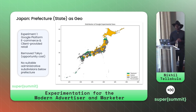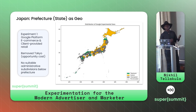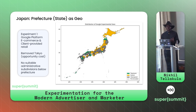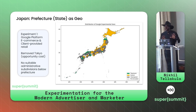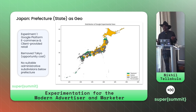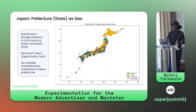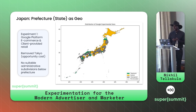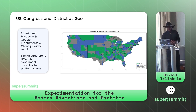One experiment currently running is in Japan, where we use prefecture as the geo. Japan's metropolitan areas are very densely populated while rural areas are very sparse, so prefecture-level subdivision is more suitable than county. Tokyo would generate magnitudes more revenue than anywhere else, so it was removed for opportunity cost reasons, similar to how we handled Paris. We've also used congressional districts — all 435 across the US — mapping zip codes from transactional databases into congressional districts.